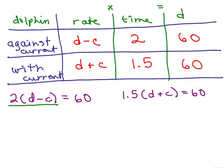So if I divide both sides by 2, notice these 2's cancel and I just have d minus c equals 30. And we could do the same thing over here.